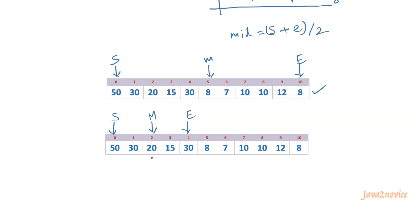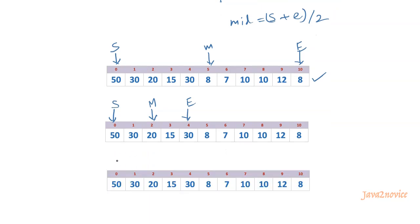Start pointer is at index 0, and end becomes mid minus 1, which is 2 minus 1 = index 1. The new mid is (0 + 1) / 2 = index 0, so mid lands at element 50. Is it a peak element? Yes — it is a peak element. In this case, just return its index. The index is 0. Notice we have not scanned the entire array — we just scanned a few elements. Now let's write the code.